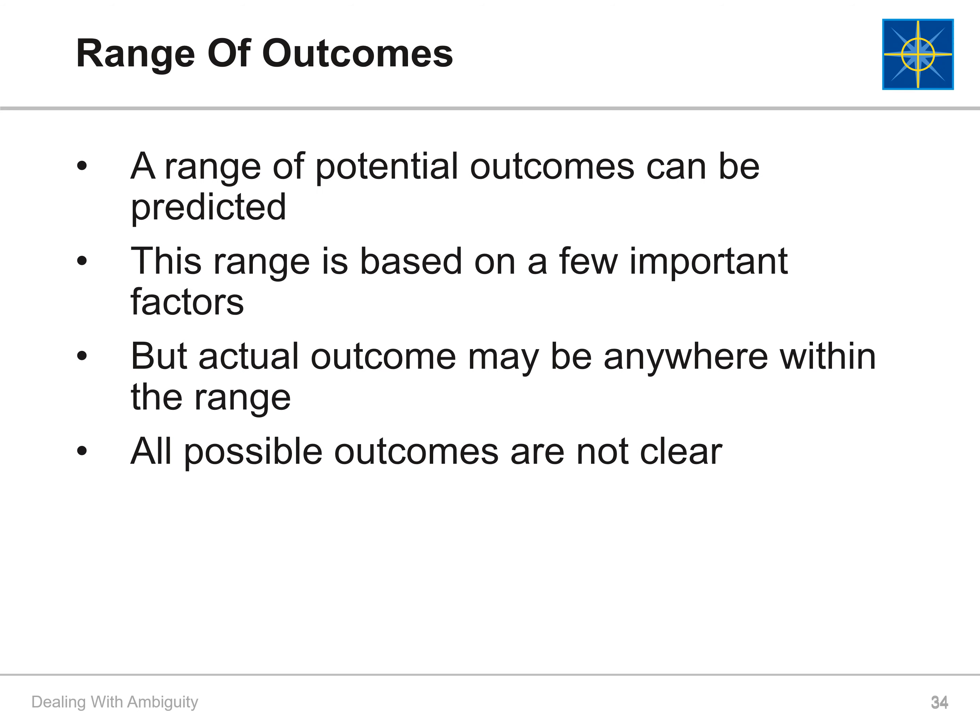Level three of uncertainty involves situations where a range of outcomes are possible. This range of possibilities can be predicted, but the actual outcome may lie anywhere within that range. This range is dependent on a few important factors which can be studied and used to make future decisions. Knowing these factors would certainly help, but the possible outcomes are still not 100% clear. The level of uncertainty here is much higher than in levels one and two.